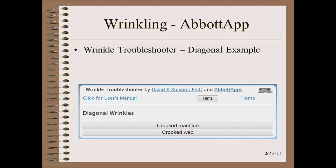One of the most common wrinkle types is the diagonal wrinkle. For this major case, we have two sub-cases: Crooked Machine or Crooked Web. So how would you tell which branch your particular wrinkle belongs to?